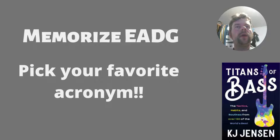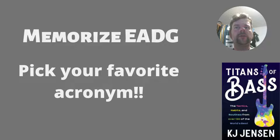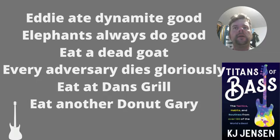A really great way to memorize E-A-D-G, because it's important to know this, is to use an acronym. An acronym is like IBM — International Business Machines. It's just a shortened form of the word. I'm going to give you some examples — choose your favorite one. This can be a little bit of fun. Here are the top six of them.